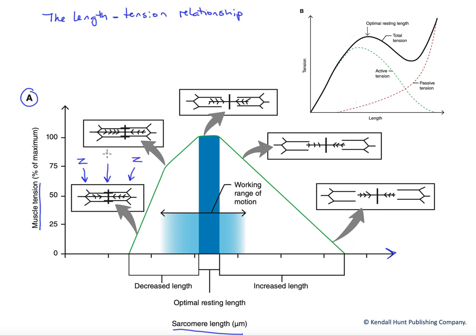In the middle here we have an M-line anchoring our thick filaments, our myosin filaments, and you can see the little cross bridges sticking out off of those thick filaments.